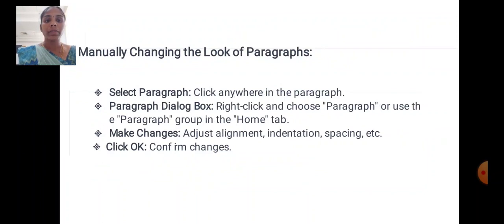Manually changing the look of paragraphs. Select paragraph: click anywhere in the paragraph. Paragraph dialog box: right click and choose paragraph or use the paragraph group in the home tab. Make changes: adjust alignment, indents, spacing, etc. Click OK: confirm changes.